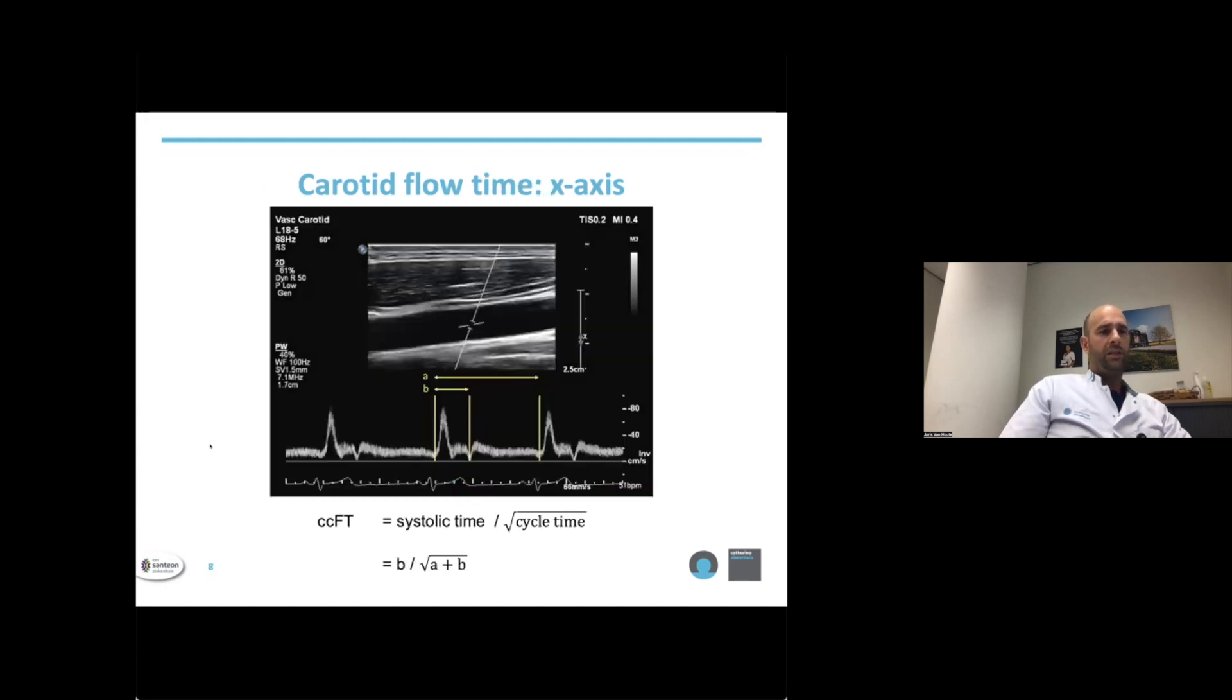In contrast, carotid flow time can be measured on the x-axis and is much less dependent on insonation angles, as imperfect waveforms still yield accurate flow time readings. Therefore, less training may be required for novice sonographers. The systolic flow time is the time from the foot of the systolic upstroke until the incisura of the dicrotic notch, as depicted by B. The complete cycle time runs from the foot of the systolic upstroke until the foot of the next systolic upstroke, as depicted by A.